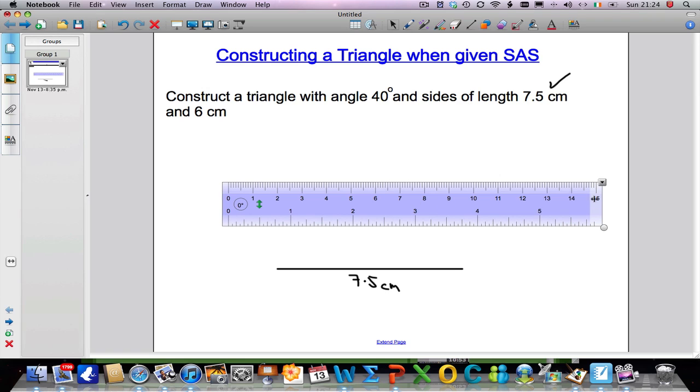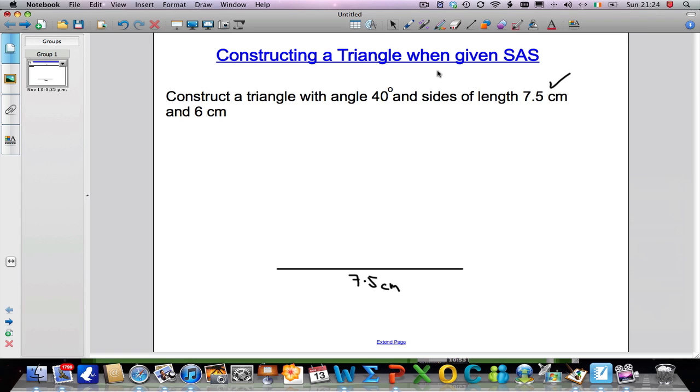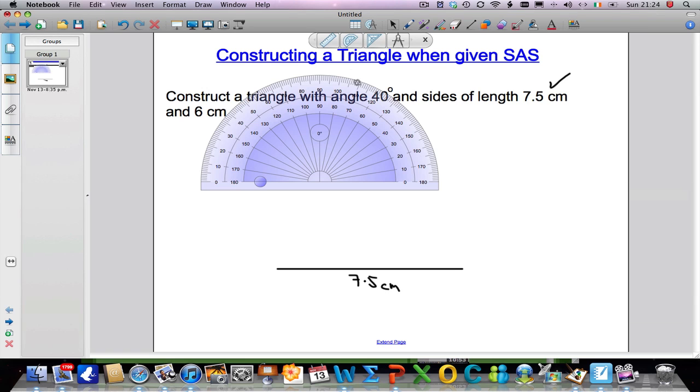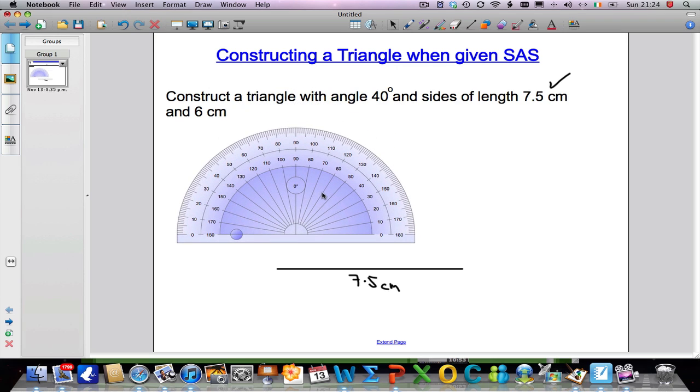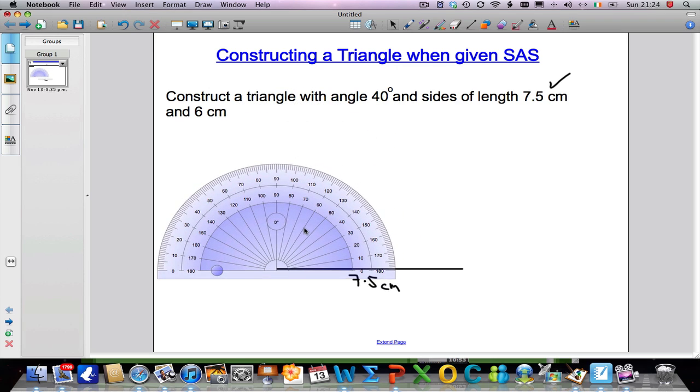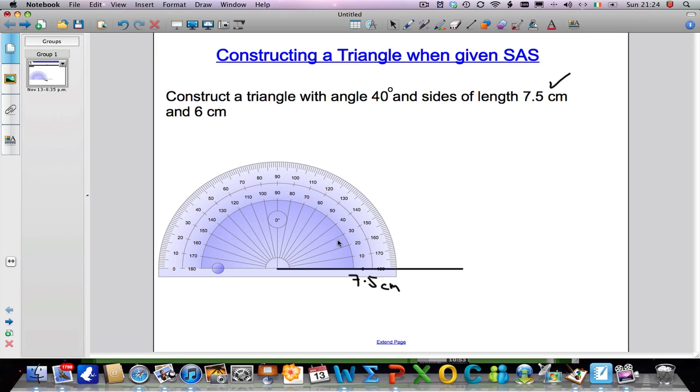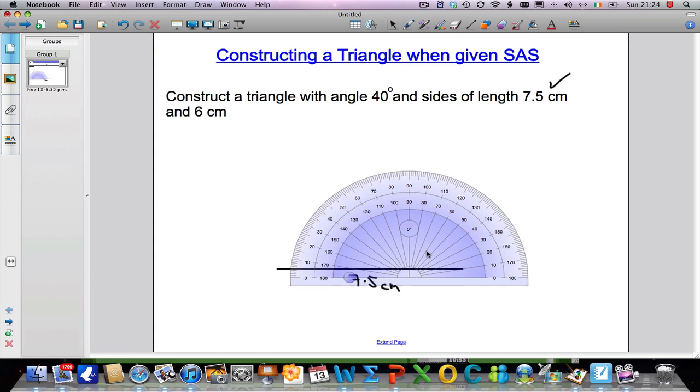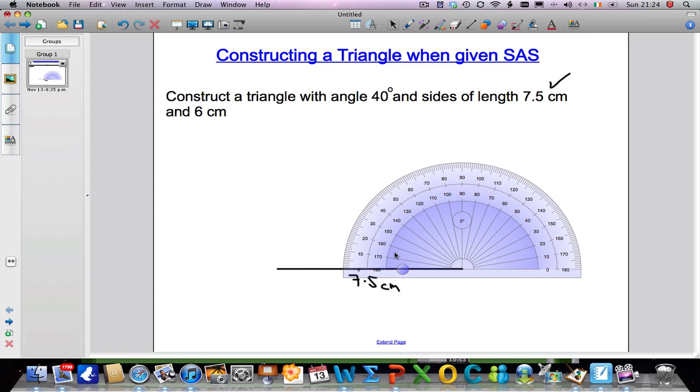Let's remove the ruler for a second so that we can clearly see what we're doing, and take our protractor. It doesn't matter which side you go to. If I go to this side and put my protractor down, I must measure from 0 right the way around to 40 and put a mark. Or if I come over to this side, again it's important that I measure from 0 around to 40.